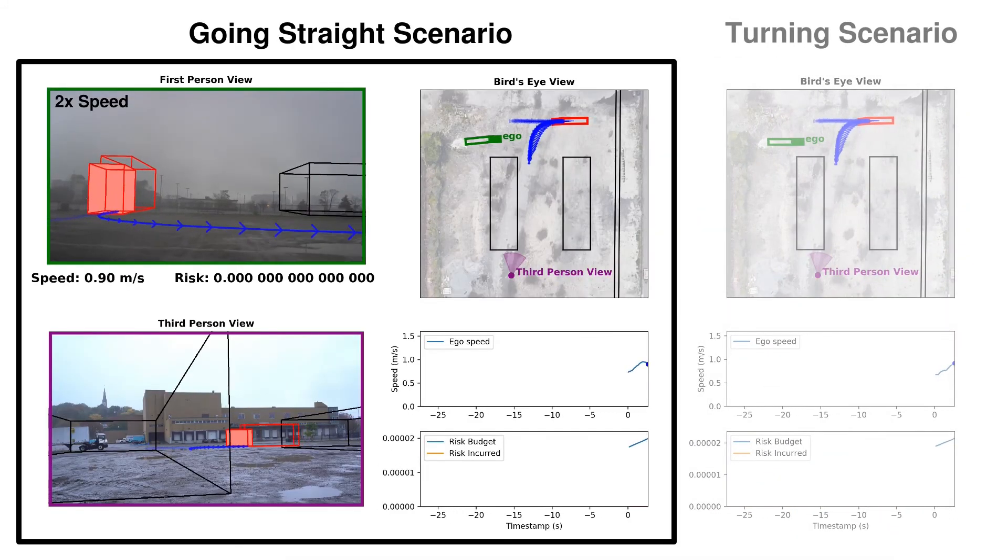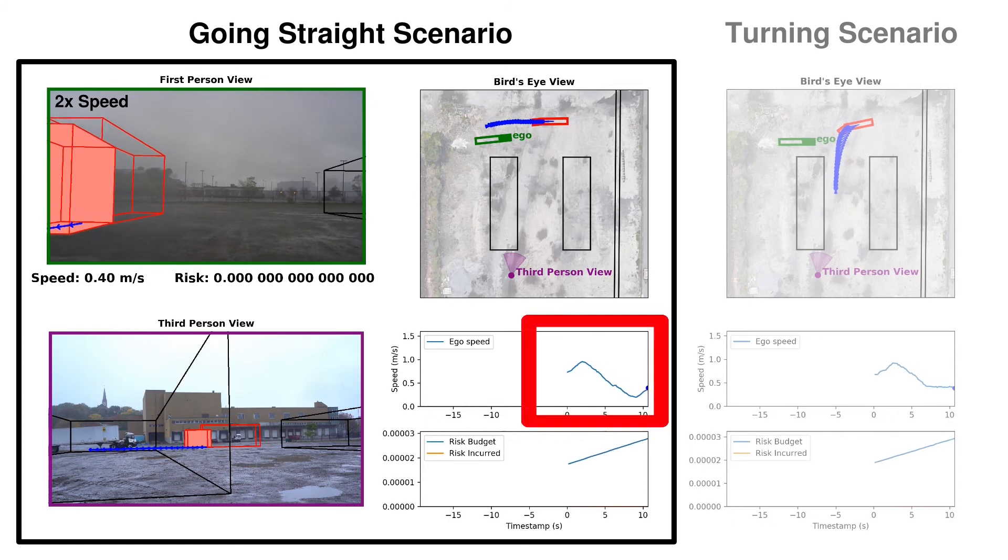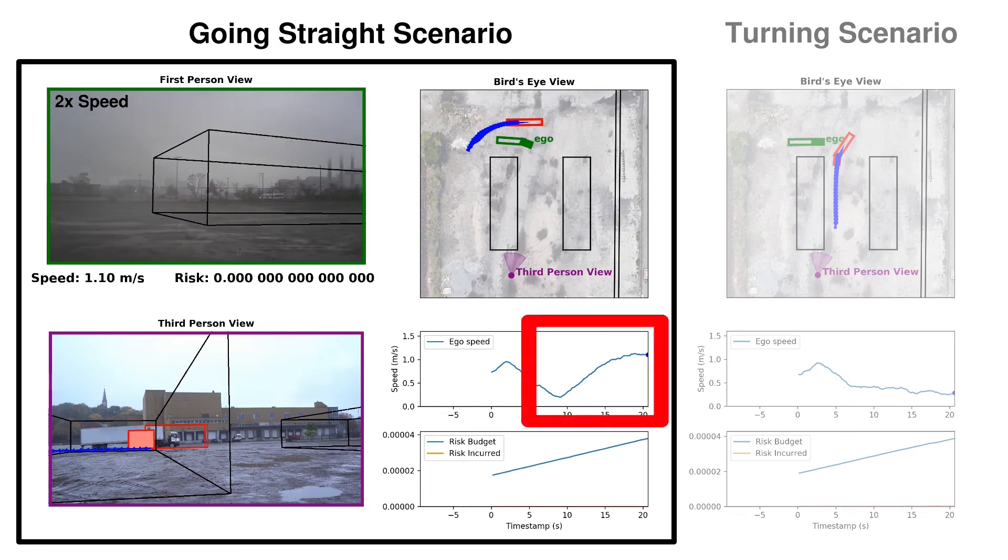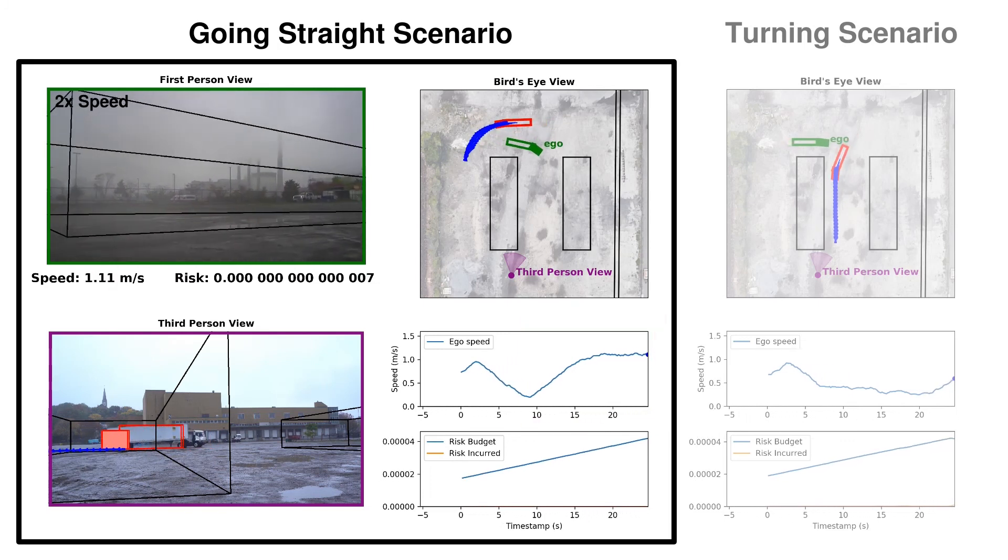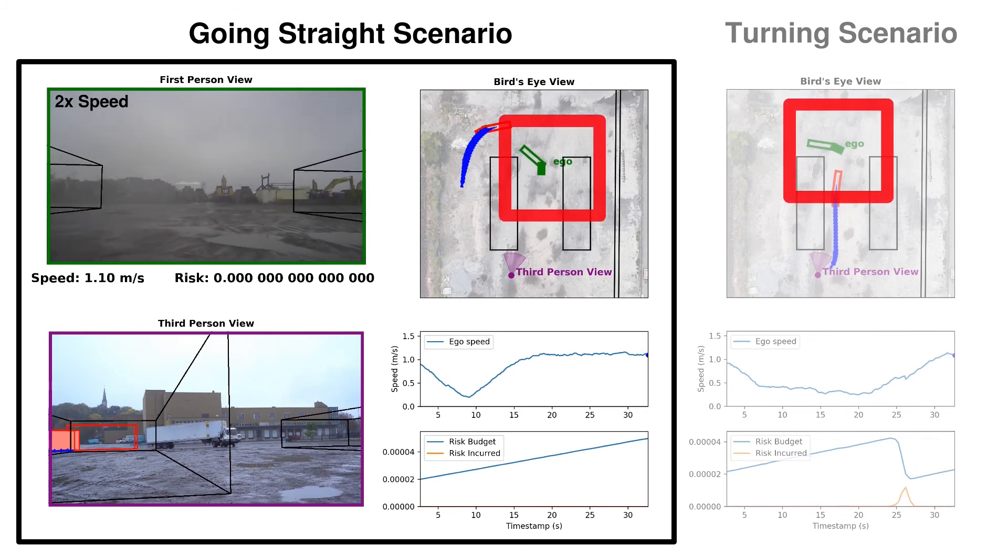Here is another trial with the same initial condition but the other tractor-trailer does not turn. We initially plan to slow down to avoid potential collision, but speed back up after the intention of the other tractor-trailer is inferred. Notice that we are more ahead compared to the previous trial.